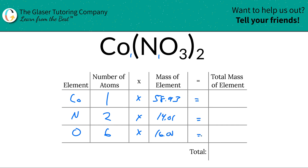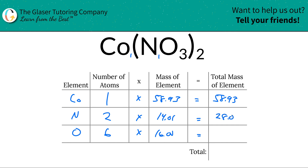Then we're going to find the total mass of each particular element in the compound. We take the mass of a single atom — or a single mole, depending on whether you're talking about molar mass or molecular mass — and multiply it by the number of atoms. So cobalt works out to 58.93, nitrogen works out to 28.02, and for oxygen you'd take 6 times 16, so it'd be 96 total units of mass.